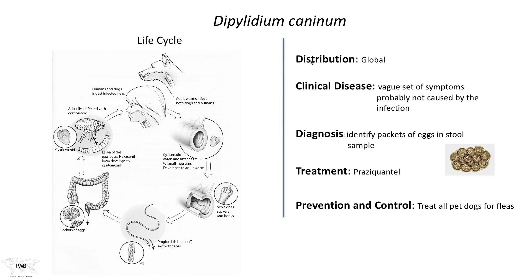Dipylidium caninum can be found throughout the world. There are vague sets of symptoms associated with this parasite in humans, and it is most likely not due to the parasite itself — so those symptoms must be attributed to something else. Diagnosis is made by finding the characteristic packages of eggs. The same treatment applies as for all adult tapeworms: praziquantel, which can cure the infection quite easily.